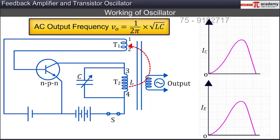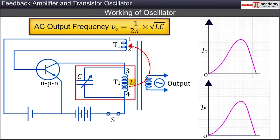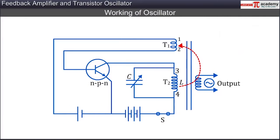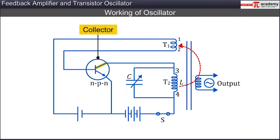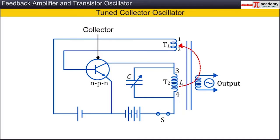The frequency of the AC output voltage is equal to the resonant frequency of the LC circuit formed by the inductance L of coil T2 and the capacitance C. Since the LC circuit is connected on the collector side of the common terminal, this form of an oscillator circuit is called the tuned collector oscillator.